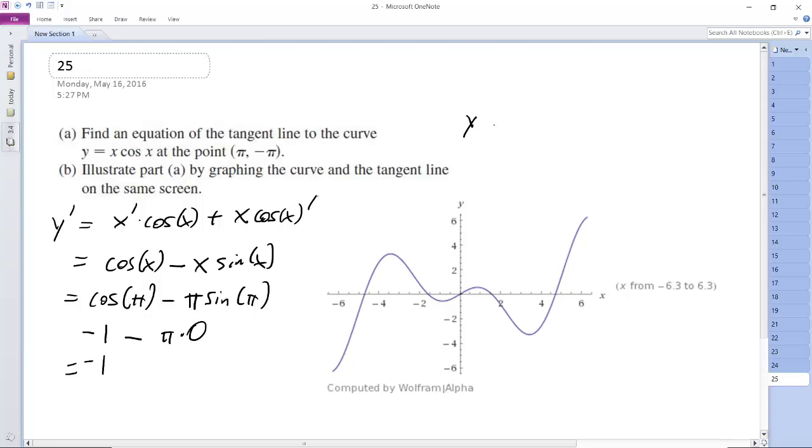Plugging this into the point-slope form, we get y minus negative π, which is y plus π, is equal to -1 times (x minus π). So we get y is equal to -x plus π minus π. These cancel out, so we get y is equal to -x.